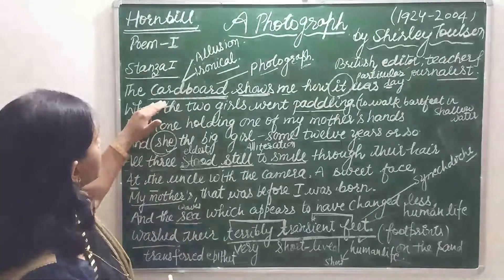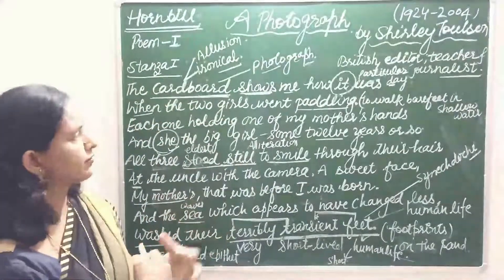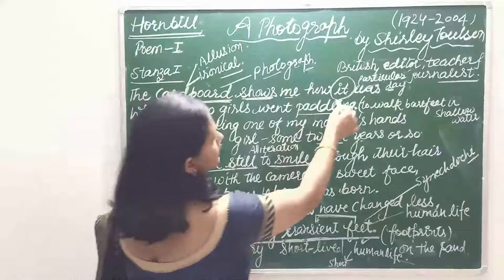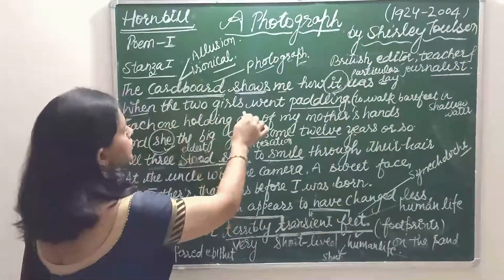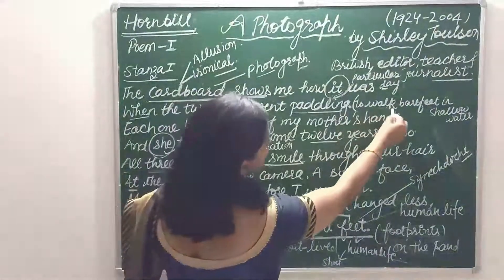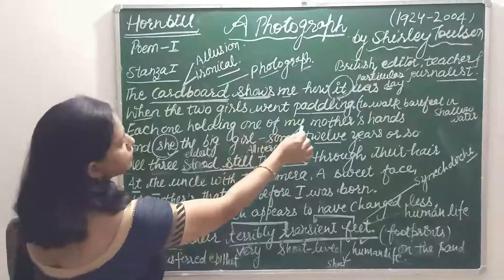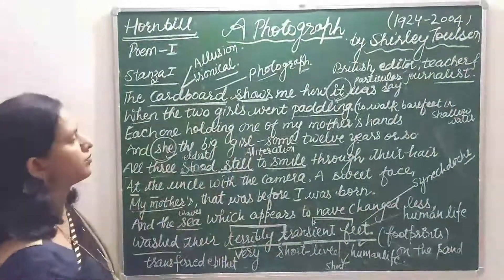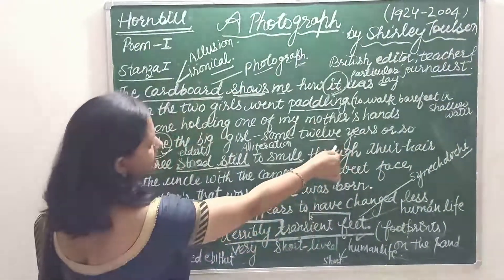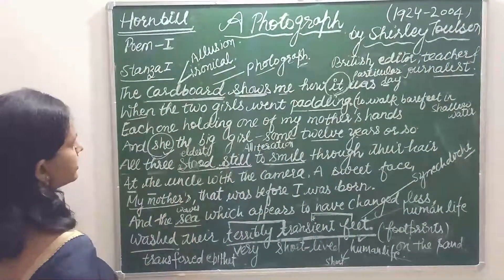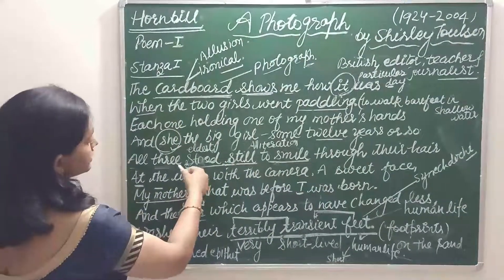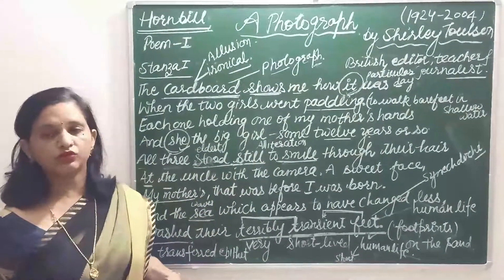The poet says that one day she came across an old photograph of her mother. Her mother was 12 years old and was the biggest one among the three. All three stood still to smile — meaning they were standing without any motion to pose for the photograph.